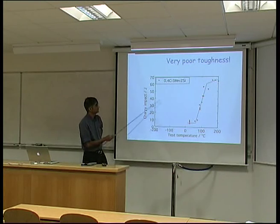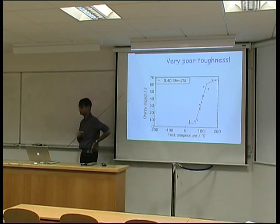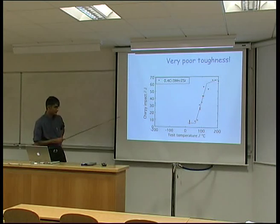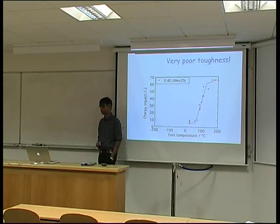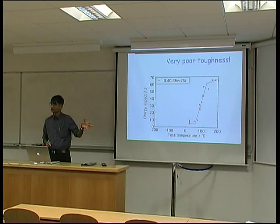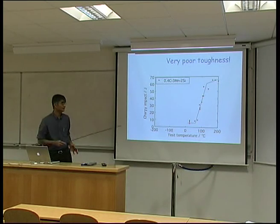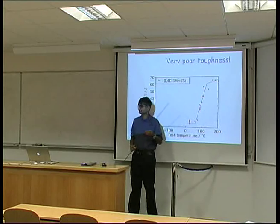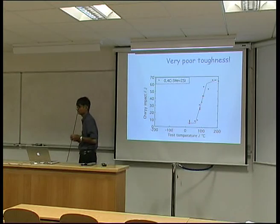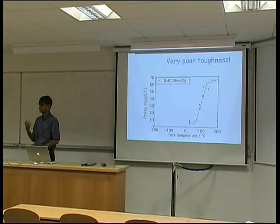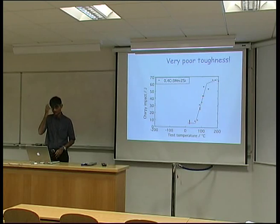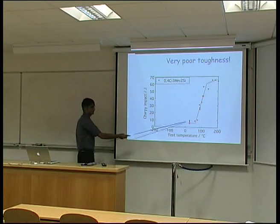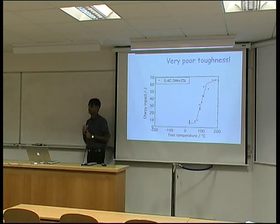If you measure the properties of carbide-free bainite of that type, once again the impact transition temperature is well above room temperature. We really want that to be below room temperature, so that failure is always in the ductile region of the impact transition. So there's something wrong with our ideal microstructure — we've got fine grain size, austenite present, no cementite particles, and yet we're getting incredibly bad toughness.